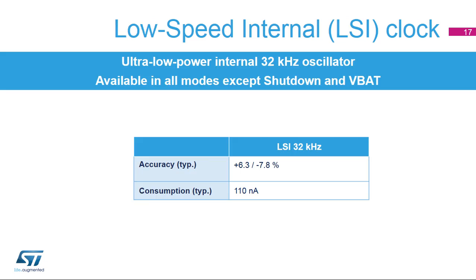STM32G0 devices embed an ultra-low-power 32 kHz RC oscillator, which is available in all modes except shutdown and VBAT. The LSI can be used to clock the RTC, the low-power timers, and the independent watchdog. The LSI consumption is typically 110 nanoamps.